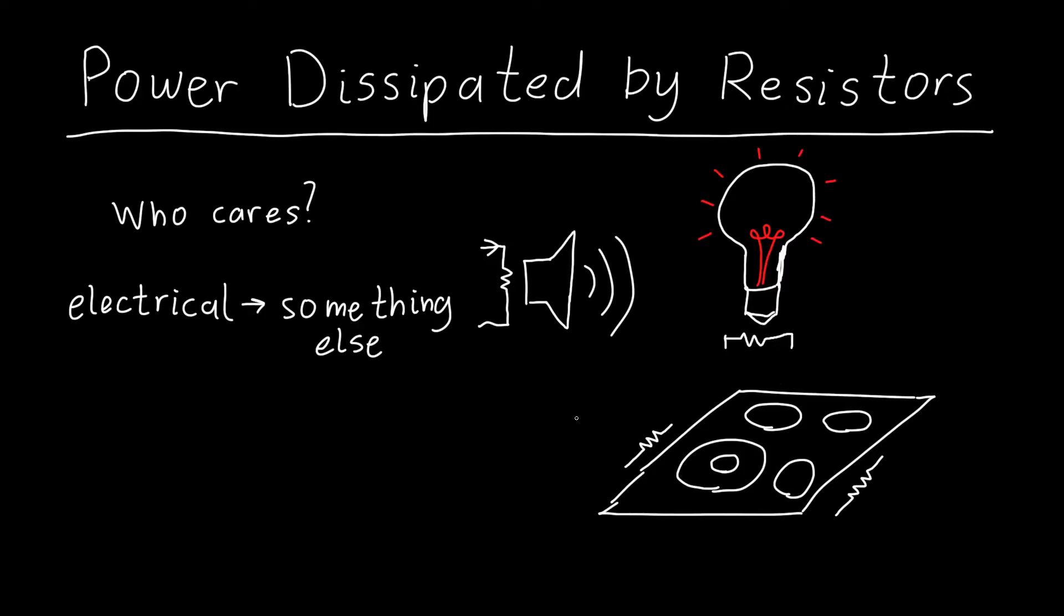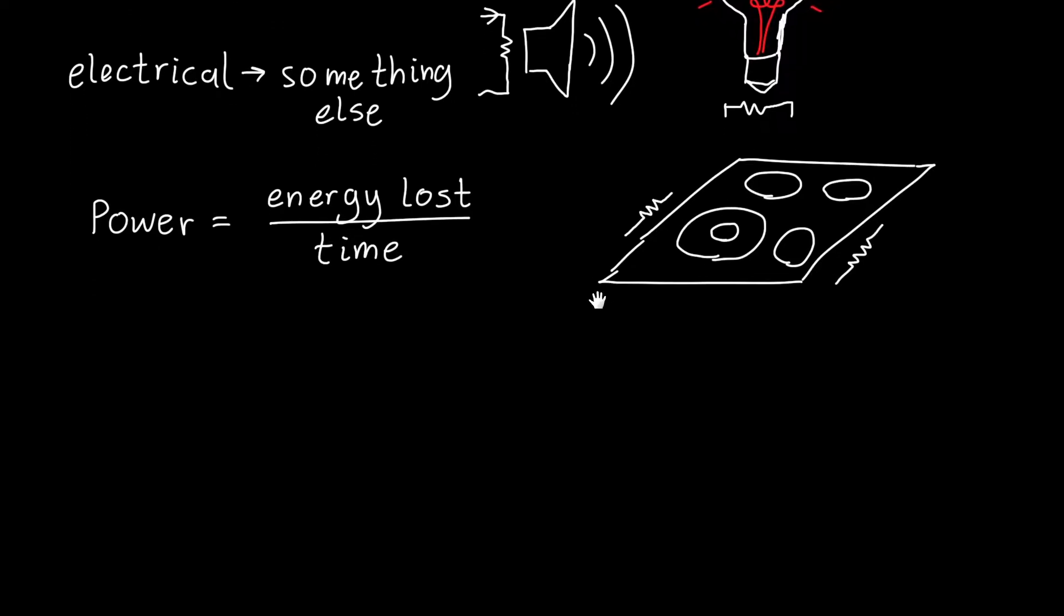So how do we actually find the amount of power lost in a resistor? And how do we relate it to the things that we do know? Well, power dissipated in a resistor is just the energy lost in that resistor per unit time. So we need to figure out the amount of energy that our resistor loses in some amount of time, and then divide the two.